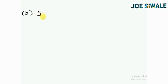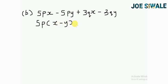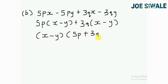To factorize completely this expression 5px minus 5py plus 3qx minus 3qy, I can see that 5p is common into 5px minus 5py, so 5p into x minus y, plus 3q is common there, 3q into x minus y. I can see that x minus y is common in the equations, then I can write 5p plus 3q.